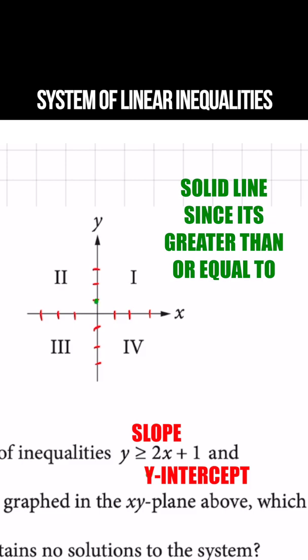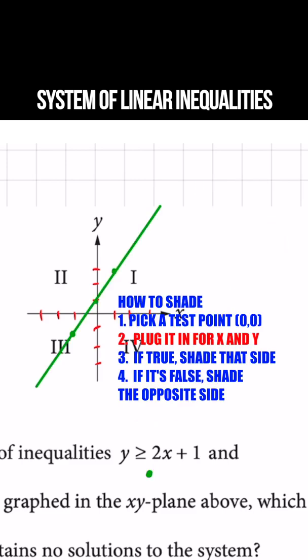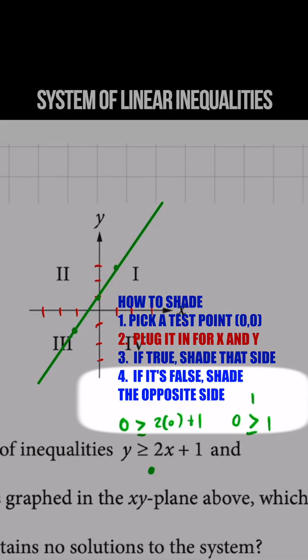So that's going to start at 1, go up 2 over 1. And to determine which way to shade, we can use a test point. I always choose 0, 0. And that is a false statement, so that means that we are going to shade above that line because 0, 0 is false.